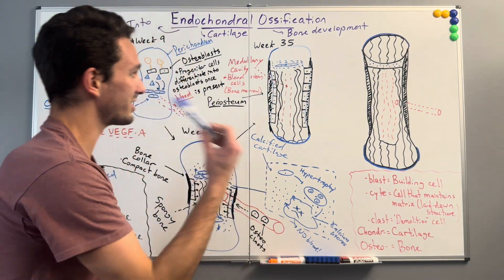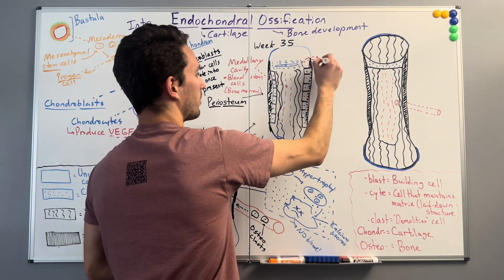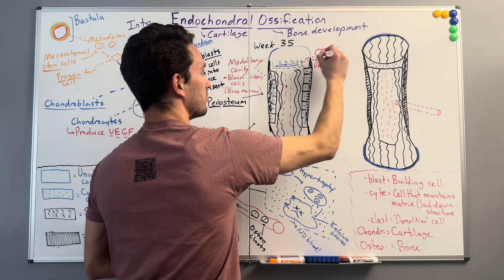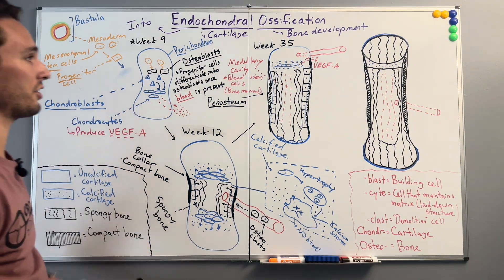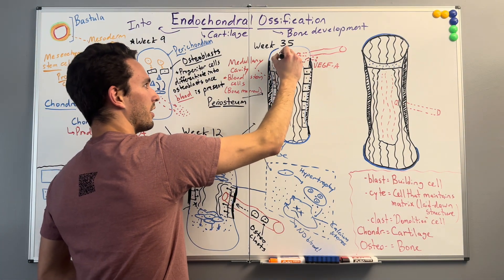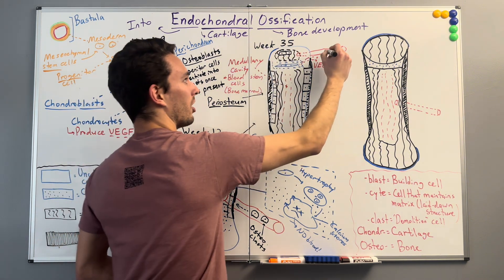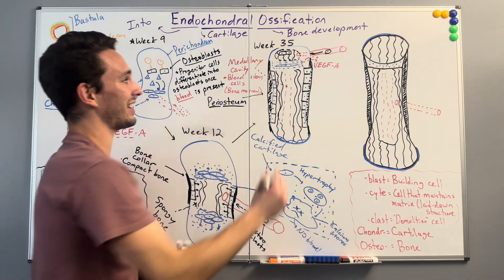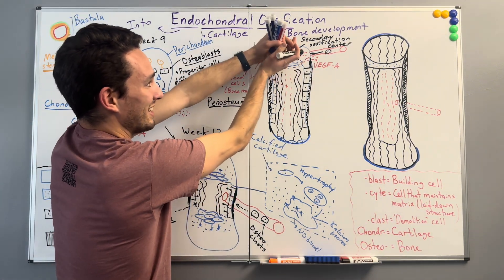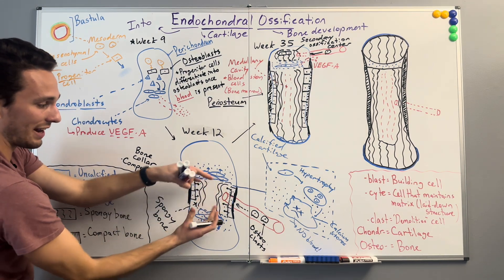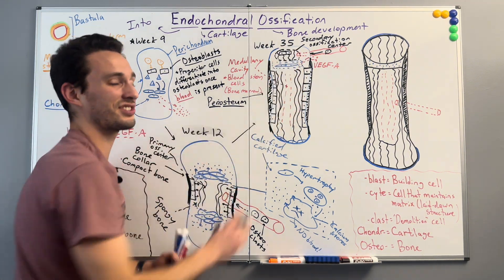In this case we do the same thing as we saw back here — we have these osteocytes produce that vascular endothelial growth factor, thus drawing a new blood supply to this area. And you remember what happened last time we did that: we got differentiation of those progenitor cells to make more osteoblasts in the area. The osteoblasts are going to start laying down even more bone tissue in this little region, laying down a secondary ossification center that will develop spongy bone inside out, just like we saw previously in the primary ossification center.